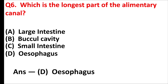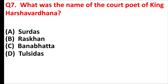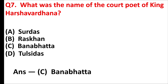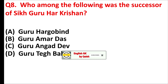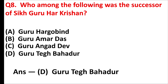Which is the longest part of the alimentary canal? Answer is option D: esophagus. What was the name of the court poet of King Harshavardhana? Answer is option C: Banabhatta. Who among the following was the successor of Sikh Guru Harkishan? Answer is option D: Guru Teg Bahadur.